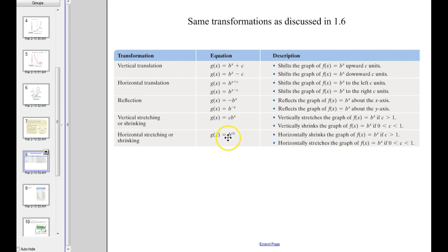And then the shrinking and stretching, same thing as before. If it's happening after you go to the x power, that's vertically shrinking or stretching based on the sign of the number. And if it happens before, if it happens to the input, then that's a horizontal shrink or stretch. Same exact transformations discussed in 1.6, just a new type of function that we're applying those transformations to.